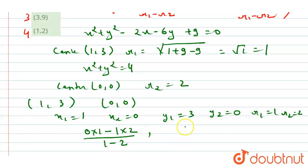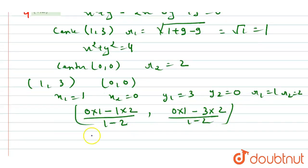We will find the value for y: (y₂ × r₁ - y₁ × r₂)/(r₁ - r₂), which is (0 × 1 - 3 × 2)/(1 - 2). On solving this we will get